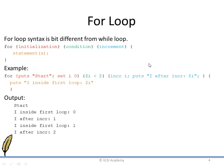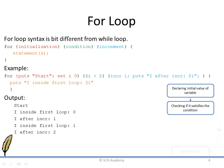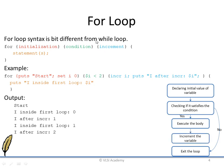Then again it will check the condition — i is still lesser than 2, so it will print again. It will increment and 'i after increment' will be printed. But when the condition is checked again it will fail, and hence the loop will exit. So the flow of the for loop is: first declare the initial value of the variable (initialization), then check whether the condition is satisfied. If not satisfied it exits the loop. If satisfied it executes the body, then increments the variable. After incrementing it checks the condition again, and keeps executing as long as the condition is satisfied. As soon as the condition is not satisfied it exits.